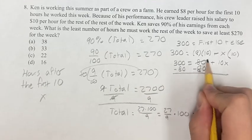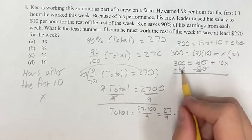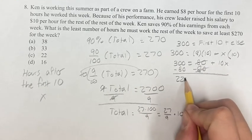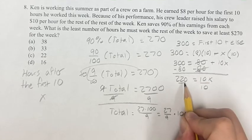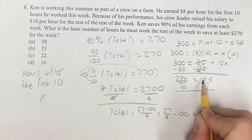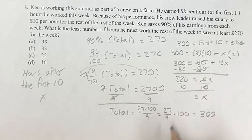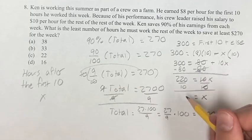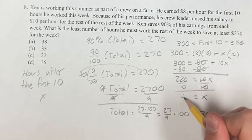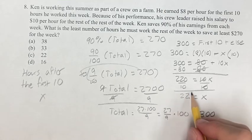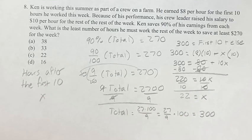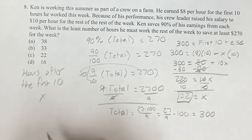Subtract 80 from both sides — these cancel — and you get 300 minus 80 is 220, equal to 10x. Divide both sides by 10, and you get x is equal to 220 over 10, which is 22. So this is the number of hours he has to work after the first 10 to save at least $270. 22 is going to be your final answer — choice C, 22.